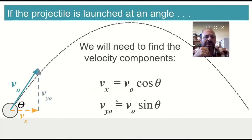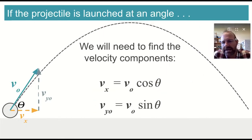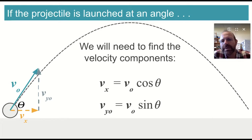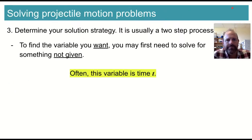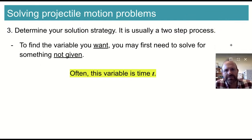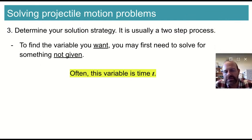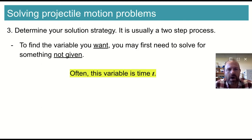If we launch it at an angle, though, we have to find the x and y components of velocity. For that, you need the initial velocity and the angle, or sometimes other information to get to that point. The solution strategy is usually a two-step process: to find the variable you want, you usually need to solve for something not given — which is often the time — in either x or y, and then translate that information over to the other side.